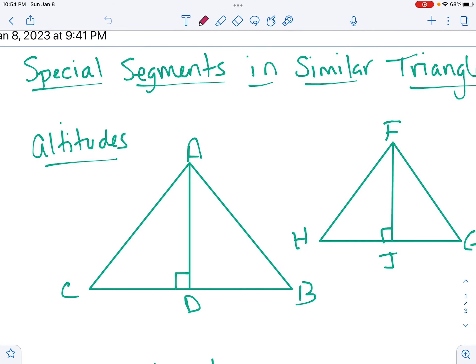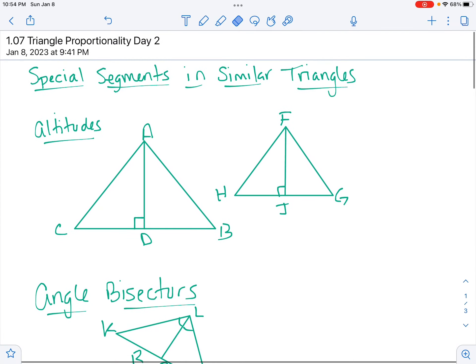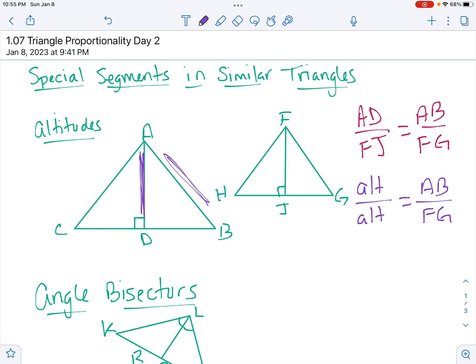So with altitudes, anytime we have two similar triangles with the altitudes drawn in, you can set up lovely proportions to solve, actually to solve for the altitudes or to use the altitudes. How you would do that is AD over FJ equals one of the sides over another side. Now here's how I really like to write it: altitude over altitude equals side over side. If this first triangle is on top, he has to stay on top when you do the side. Just pay attention to that part.